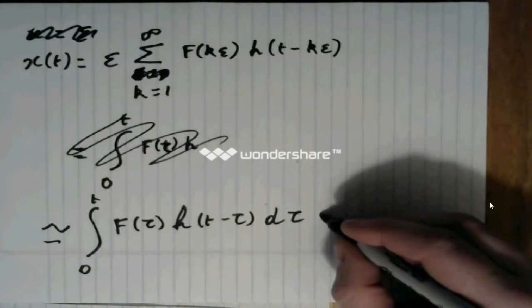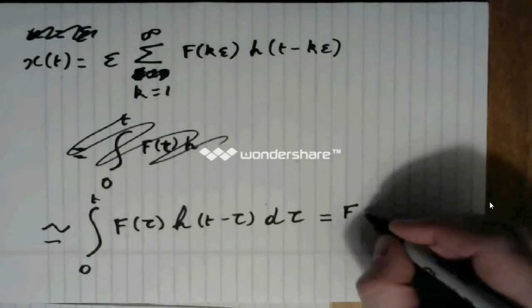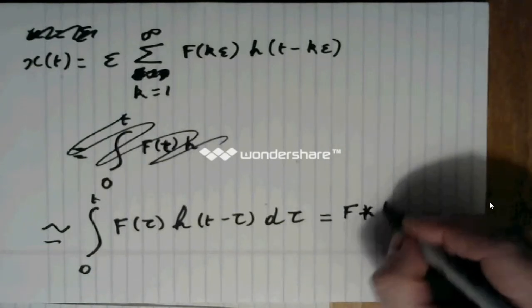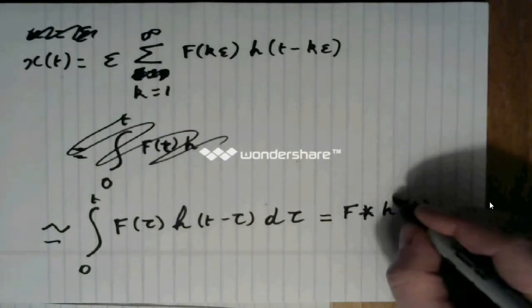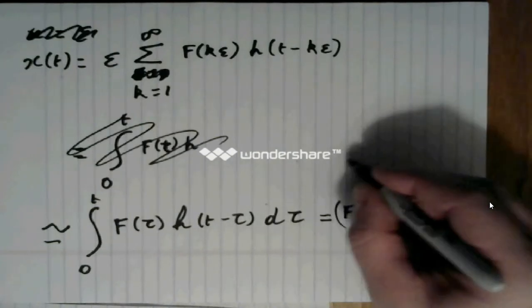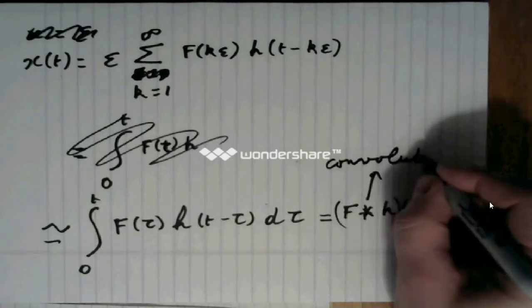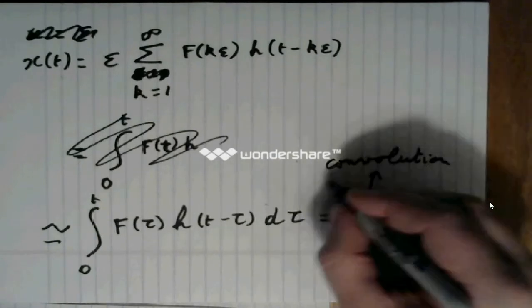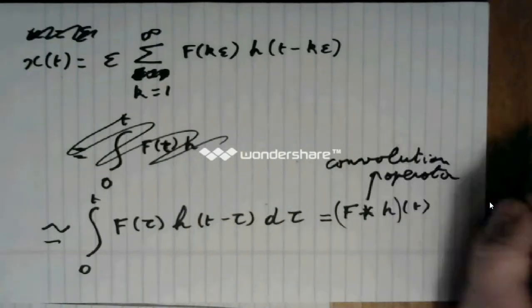which is also written as f star h of t, where the star thing is named the convolution operator.